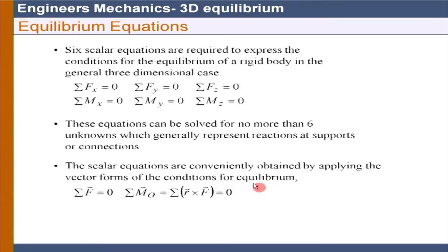This session and the next one will be on 3D equilibrium. 2D equilibrium is already completed. From there, we learned that for a rigid body to be in equilibrium, we need 3 equilibrium conditions: sum of force along x equals zero, sum of force along y equals zero, and moment about a point equals zero. Based on that, you can actually solve for the support reactions.